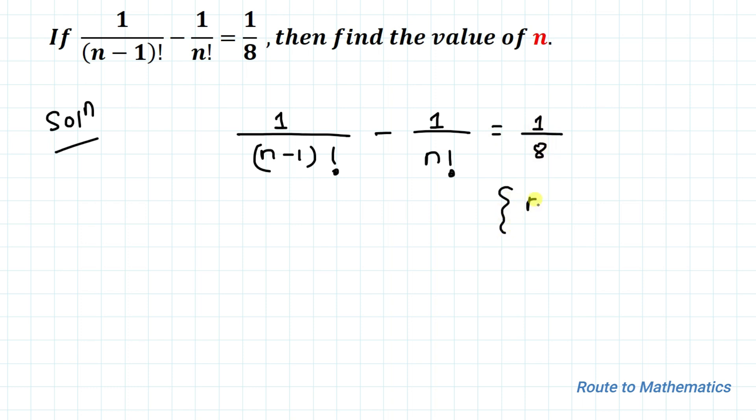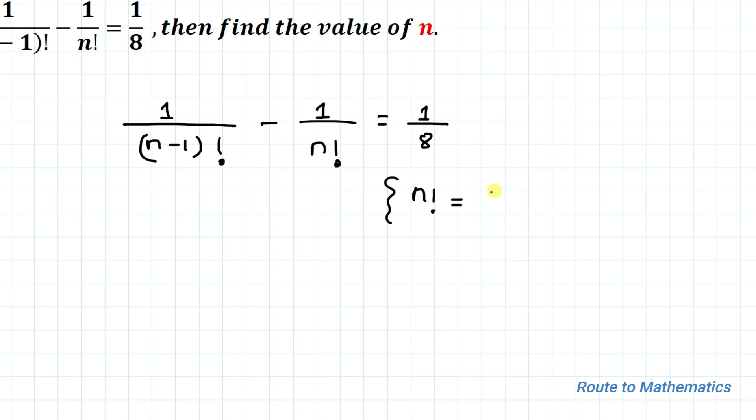We know that factorial is nothing but the product of all integers from 1 to given positive integers. So we can write n! is n multiplied with (n-1) multiplied with (n-2) till multiplied with 1.